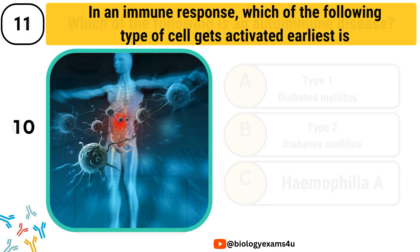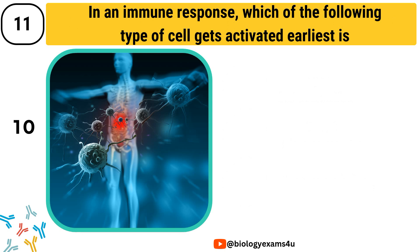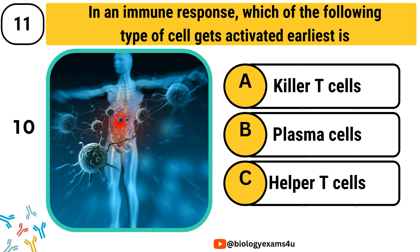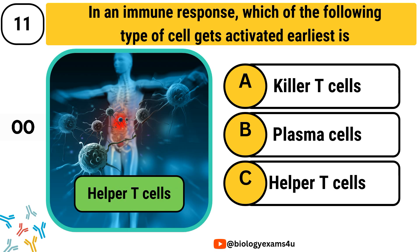Question number 11. In an immune response, which of the following type of cell gets activated earliest? Option A, killer T-cells. Option B, blast cells. Option C, helper T-cells. The correct answer is helper T-cells.